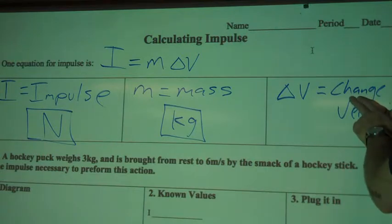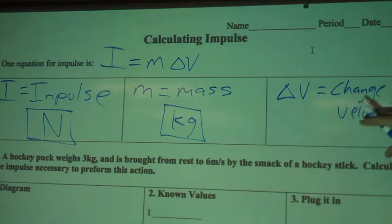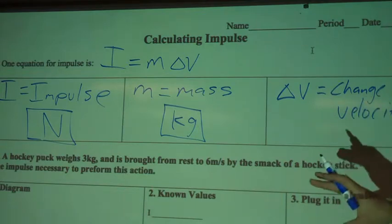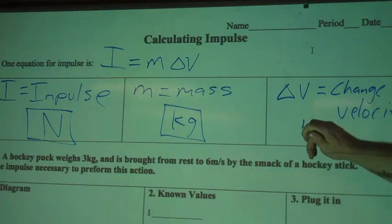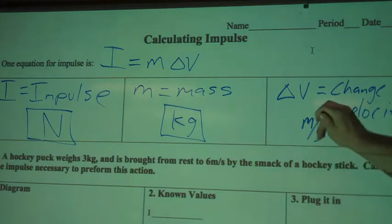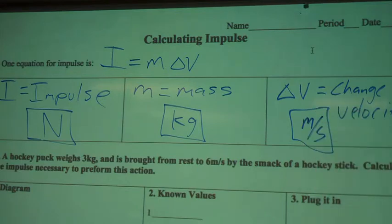You're finding the change in something's velocity, and when you have change in something, you're probably going to have to subtract two different numbers or find a difference between them. Velocity is measured in meters per second—that's the most common unit you're going to see.